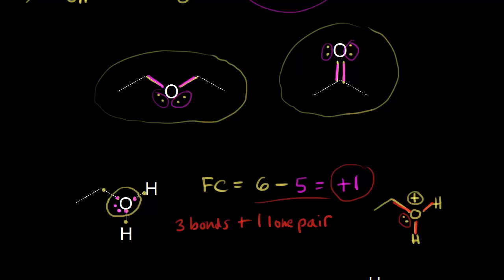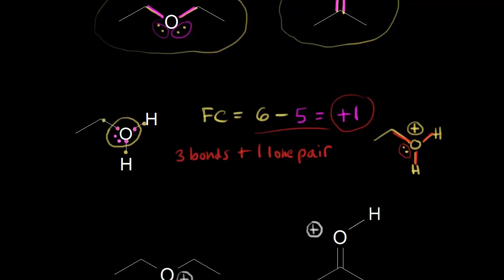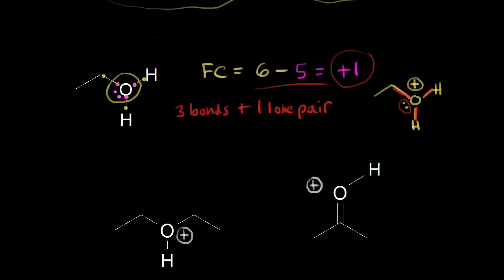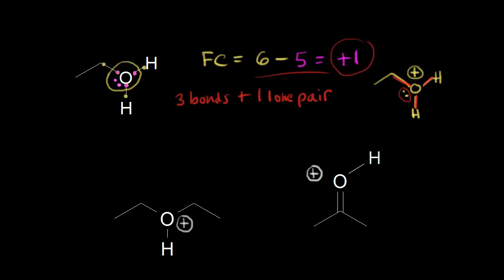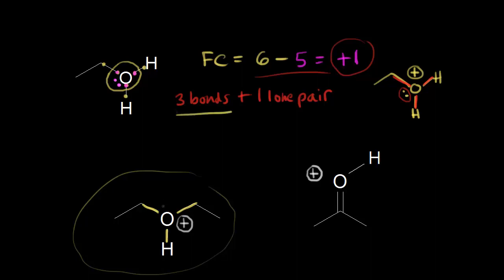Let's look at some more examples where oxygen has a formal charge of plus one, with the lone pairs left off for convenience. Starting with the example on the left, the oxygen with a plus one formal charge has three bonds to it — here's one, here's two, and here's three. In order for that oxygen to have a plus one formal charge, it must also have one lone pair of electrons on it. You could leave them off and know that they're there, or you could draw them in — I'll go ahead and draw them in on that oxygen.